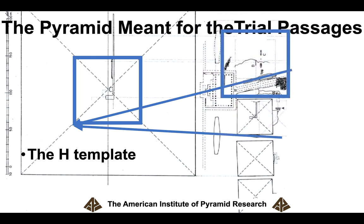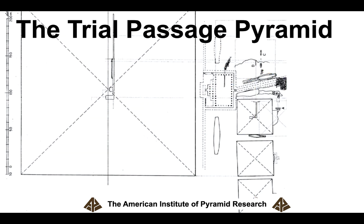Well, that is the size of the pyramid that was meant for the trial passages. Okay, so the Queen's Pyramids run right through the trench called the third trial passage. That would be the exact center of that pyramid. And there's the line of the trial passages, which exactly mimics the line of passages in the Great Pyramid. So, there is the pyramid that was meant for the trial passages.